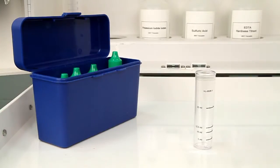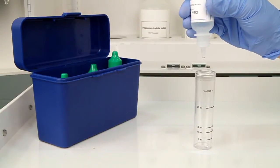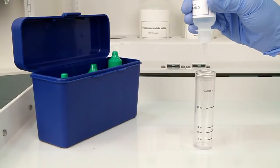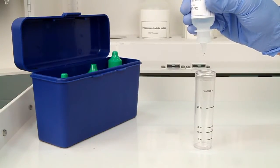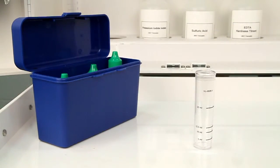Next, add 10 drops of citric acid. Hold the bottle vertically to get a consistent drop size. After the addition of each reagent, swirl the vial to make sure the reagents are properly mixed.